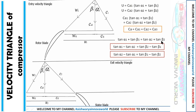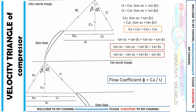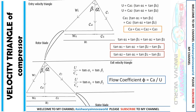The second important concept is flow coefficient, denoted by phi. It is the ratio of axial flow velocity to blade speed: phi = CA / U. Looking at the diagram with CA1 on one side and U on the other helps you remember this. The reciprocal of the flow coefficient can be written as tan(alpha1) + tan(beta1), or equivalently tan(alpha2) + tan(beta2). These are important formulations.